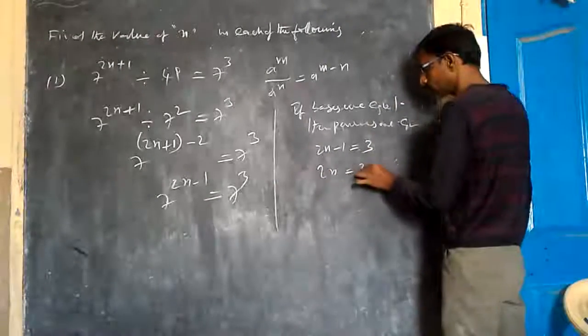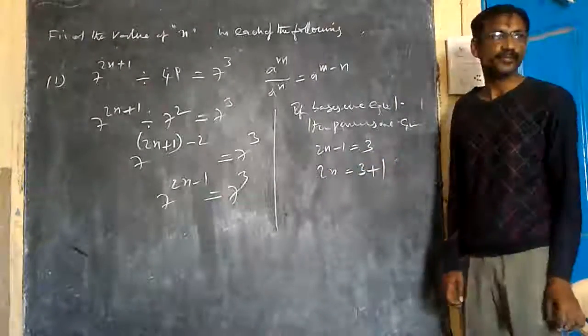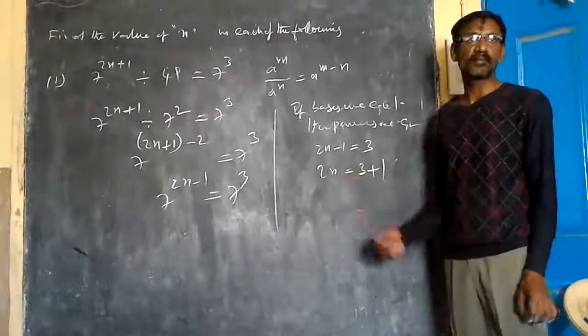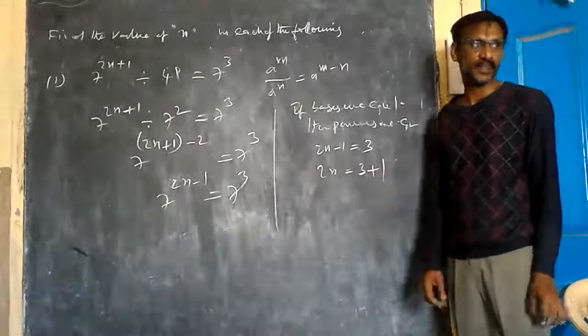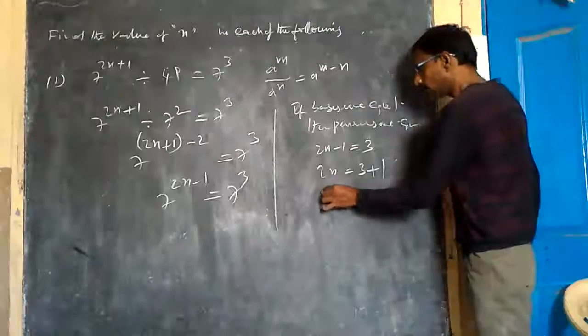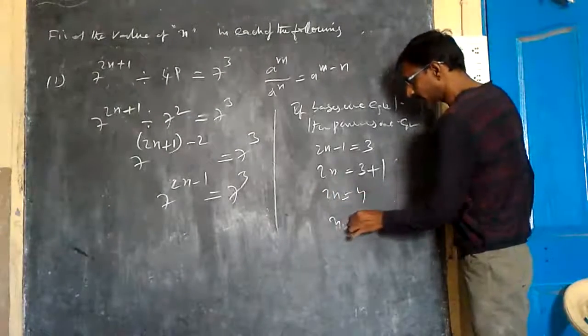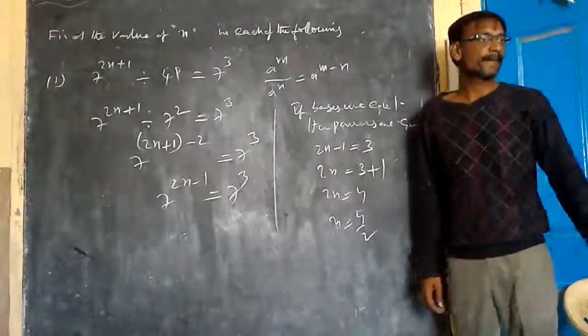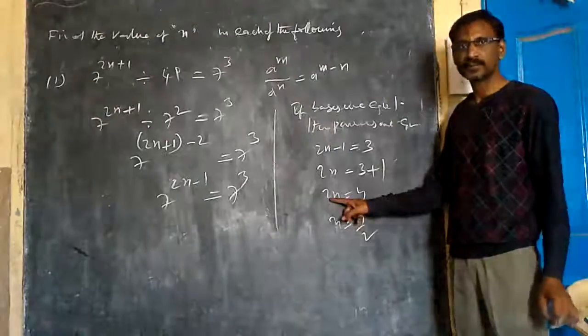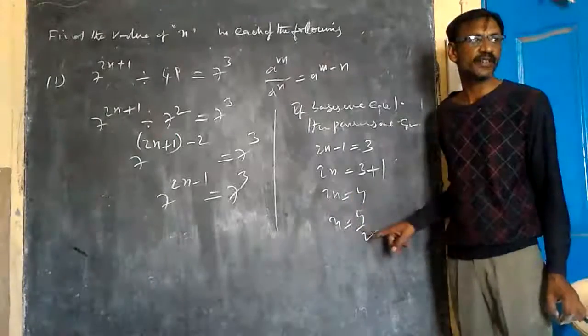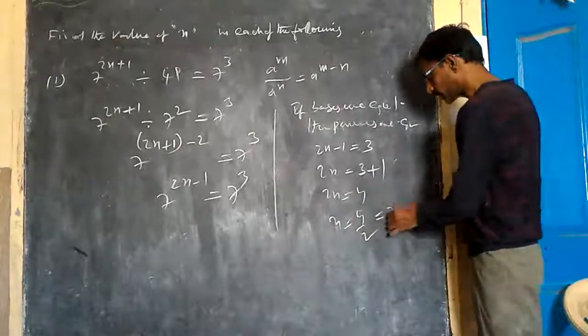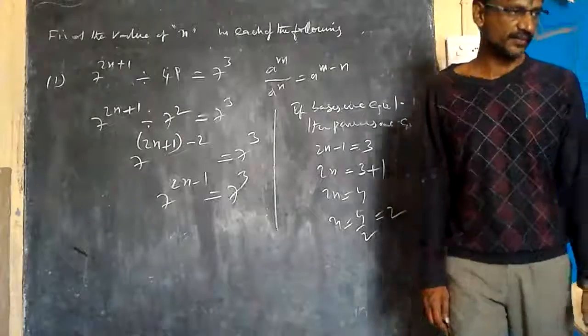By transposition, minus 1 becomes plus 1. Therefore, 2n equals 4. N equals 4 divided by 2. When we transpose the 2, it divides the 4. This gives us 2. What is my n value? 2.